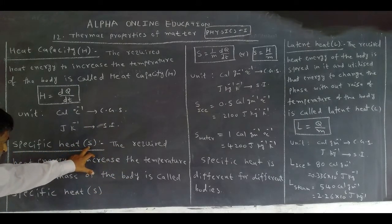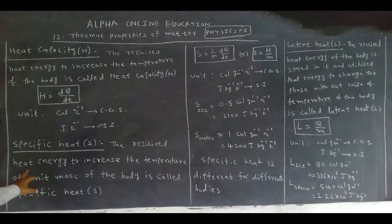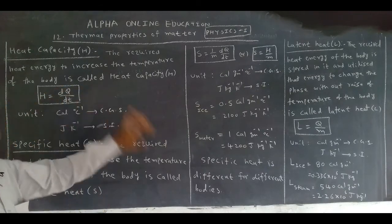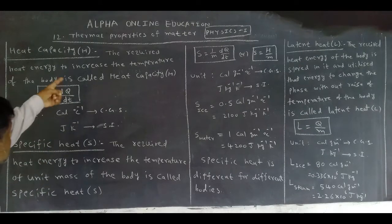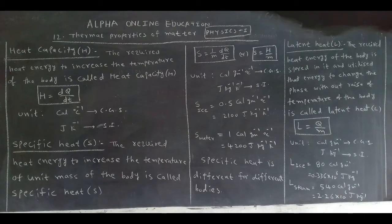Specific heat symbol is S. What is specific heat? The required heat energy to increase the temperature of unit mass of the body. Here we mention the mass — in the previous case there was no mentioning of the mass, but here the mass is mentioned. The required heat energy to increase the temperature of unit mass of the body is called specific heat, denoted by the symbol S.